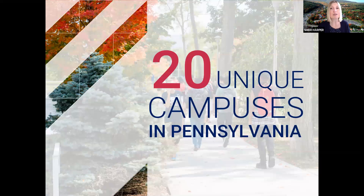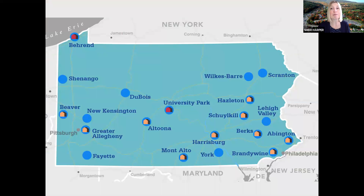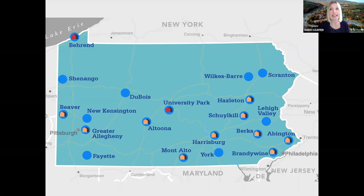There are 20 campuses at the undergraduate level, spanning from Pittsburgh to Philadelphia, up to Erie and in between. No matter what a student is looking for geographically within the state, they're probably going to find a Penn State campus nearby.